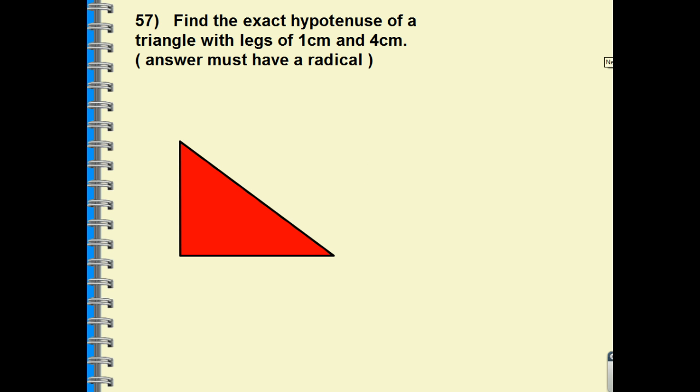Number 57, find the exact. Exact is very important. We want the exact hypotenuse. The hypotenuse is the line segment that is directly across from your 90 degree angle. So if we have a right triangle, we will be using the Pythagorean theorem. I don't see the Pythagorean theorem given to you, so I'm assuming you're going to have to have this memorized. A squared plus B squared is equal to C squared.